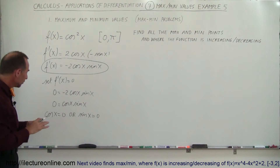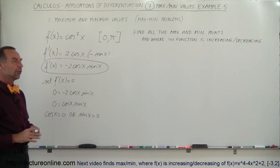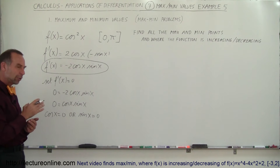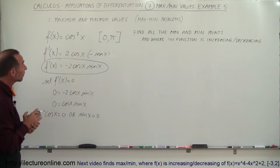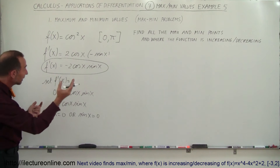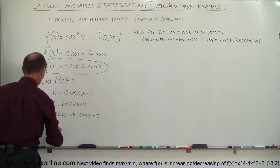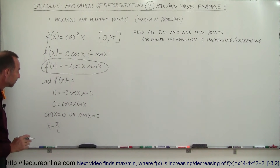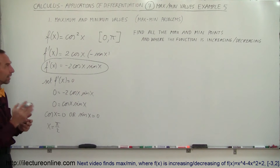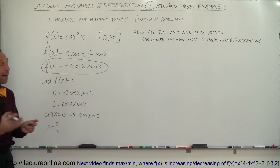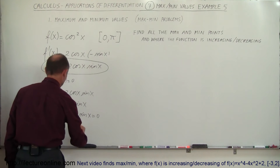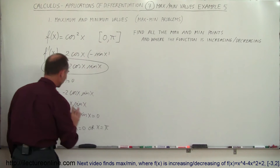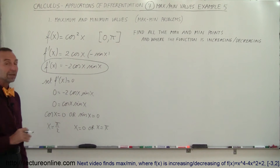If cosine of x equals zero, that means x equals pi over two — like 90 degrees. Since we're limited to zero and pi, x = pi/2 is the only possibility. For sine of x equals zero, that happens when x equals zero and when x equals pi, and both are in the domain. So there are three values of x where the slope is zero.